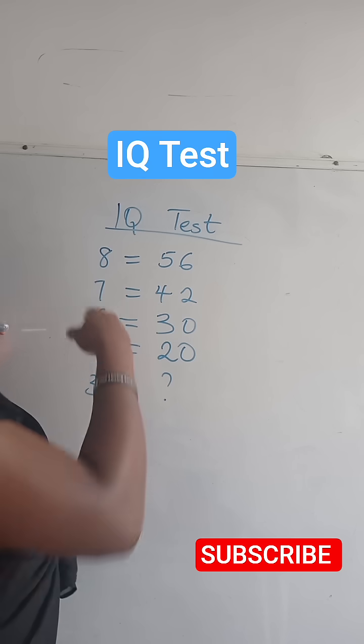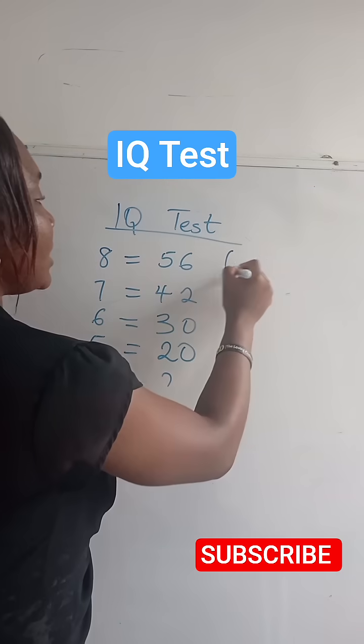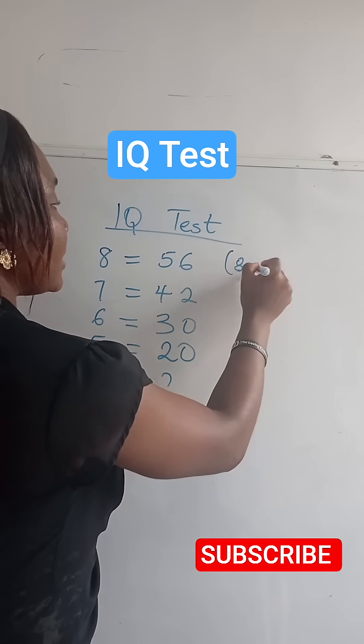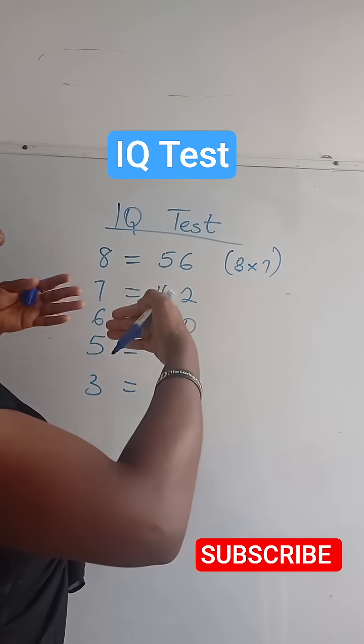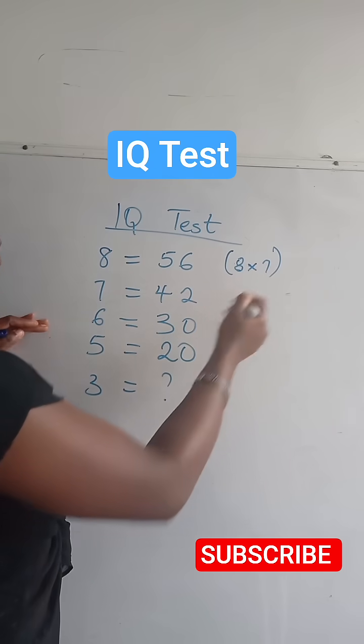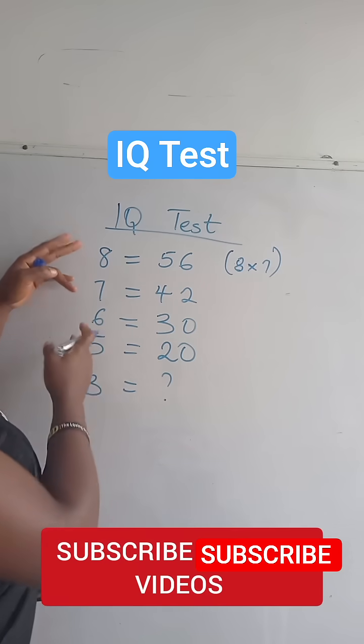Now looking at this, 8 times what gives us 56? That's 8 times 7. Now this 7 is actually the number below. It means that you're counting backwards.